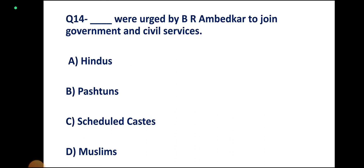Question number 14. Whom did B.R. Ambedkar argue should join government and civil services? Options: Hindus, Pashtuns, Scheduled Caste, Muslims. Correct answer: Scheduled Caste.